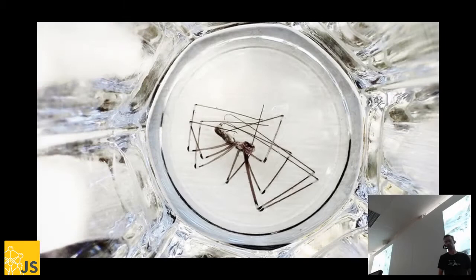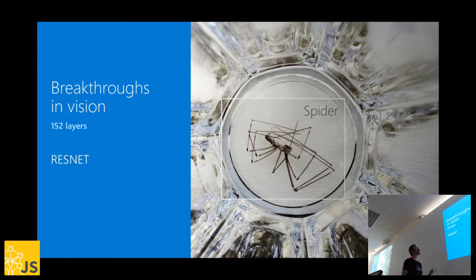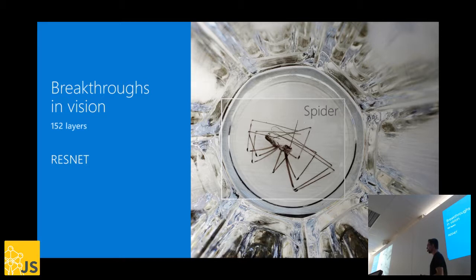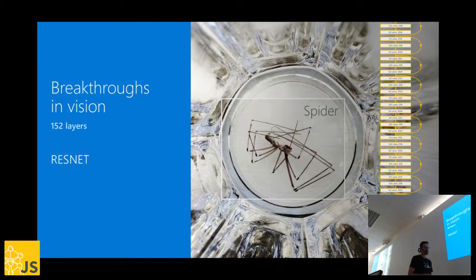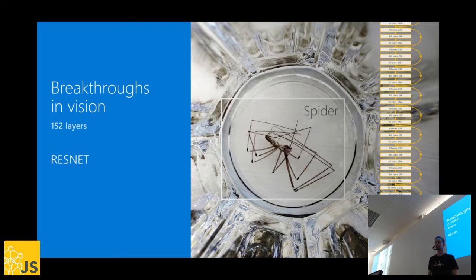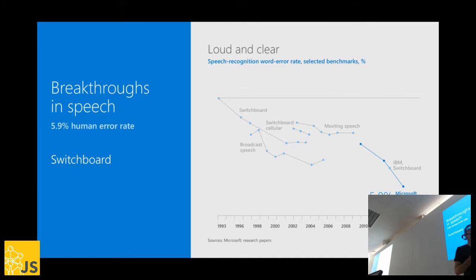Vision and image recognition is another domain. Recognizing images is really hard for a computer, while for us as humans it's fairly easy to tell a spider from a car or a chair. Through advances in deep learning and deep neural networks, we've been able to do image classification better than humans. The same goes for speech recognition — computers can now do a better job than humans at recognizing what you're saying, even in multiple languages.